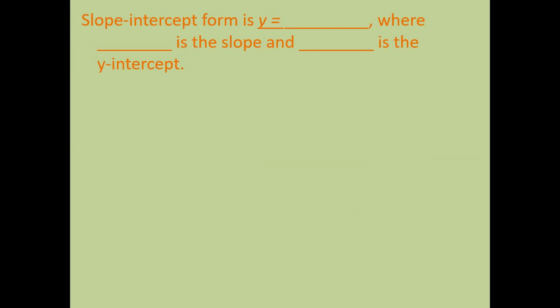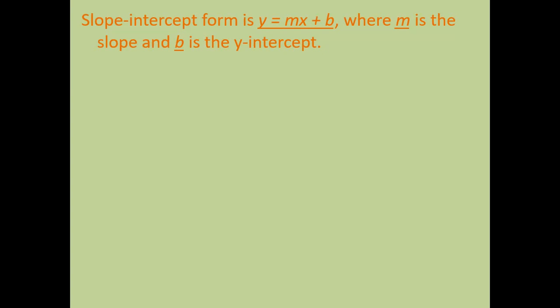I'm kind of refreshing you on that. Slope intercept form is y equals mx plus b, and in that m is the slope. Slope is always located next to x. That's going to be your rise over run for the line, and b is going to be your y-intercept. And a y-intercept is going to be the point where the line crosses the y-axis.